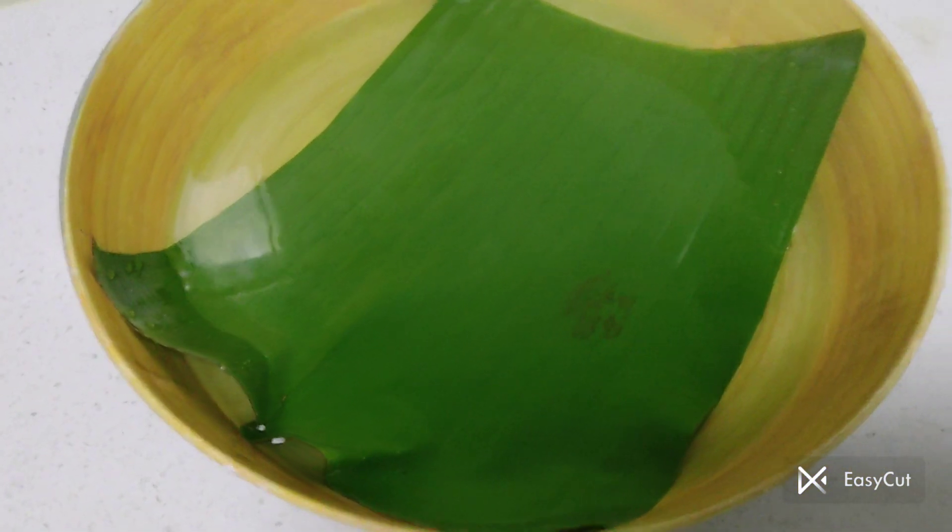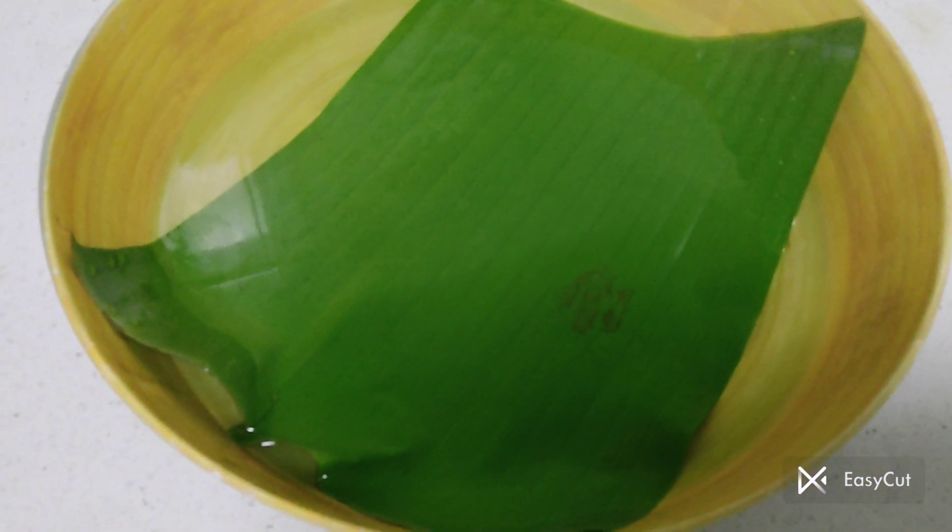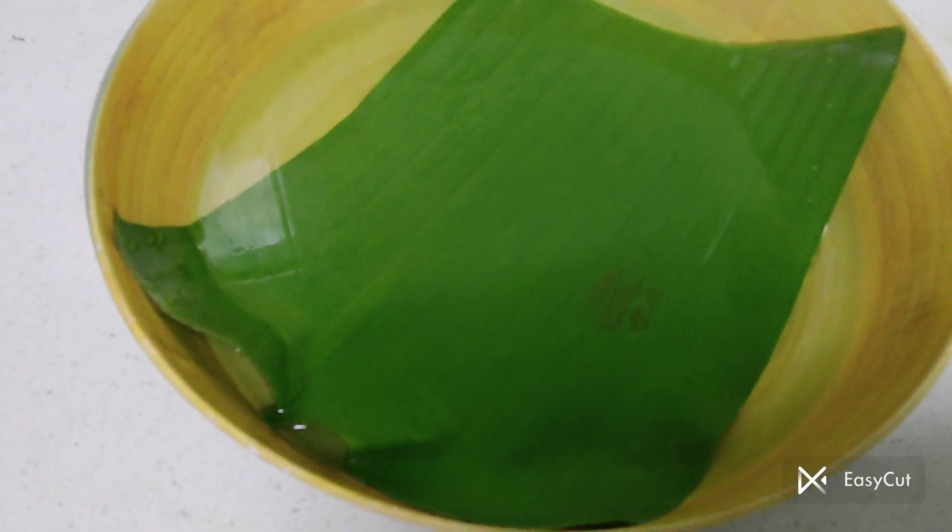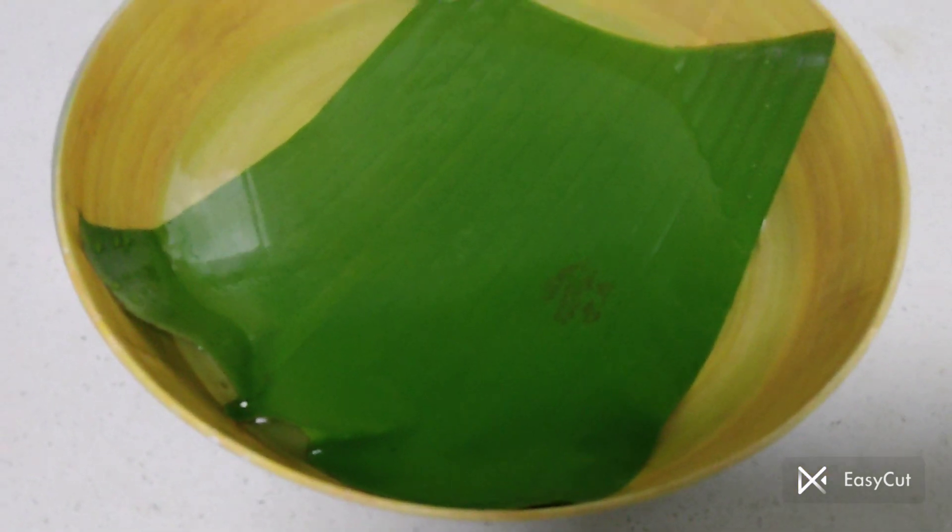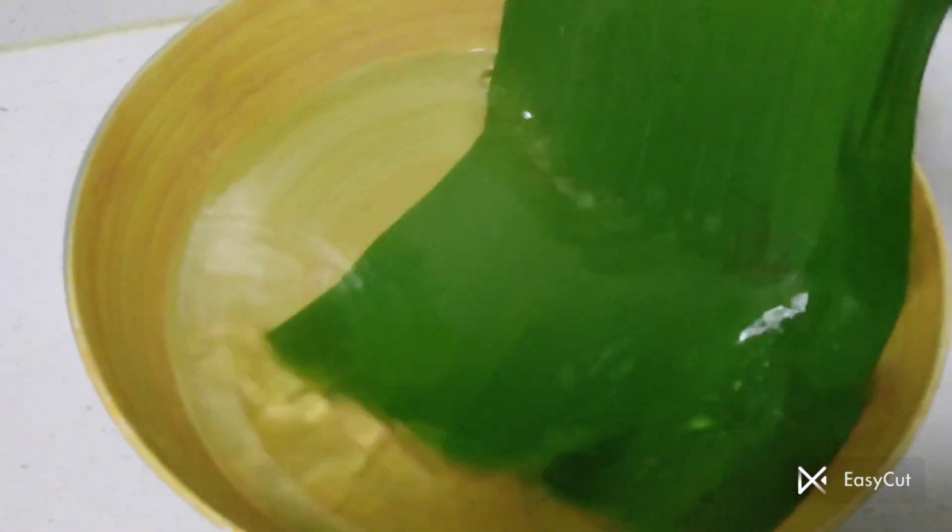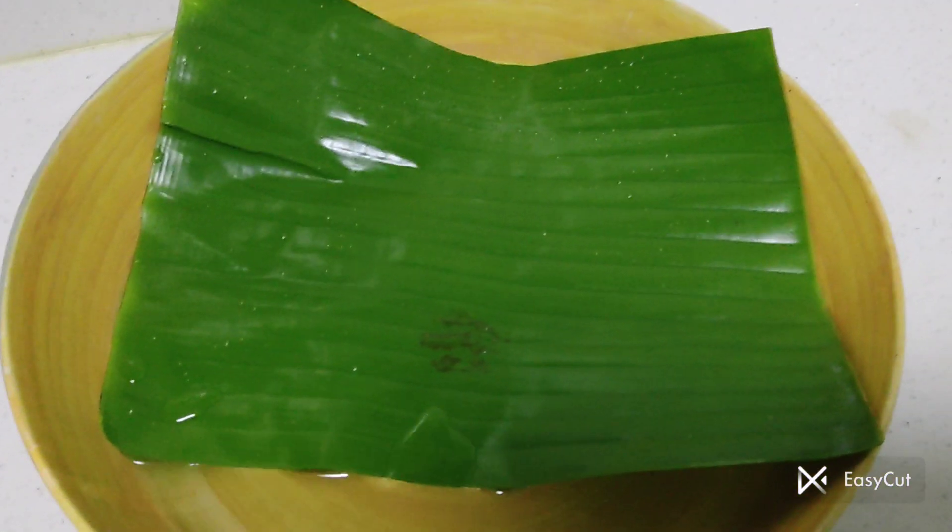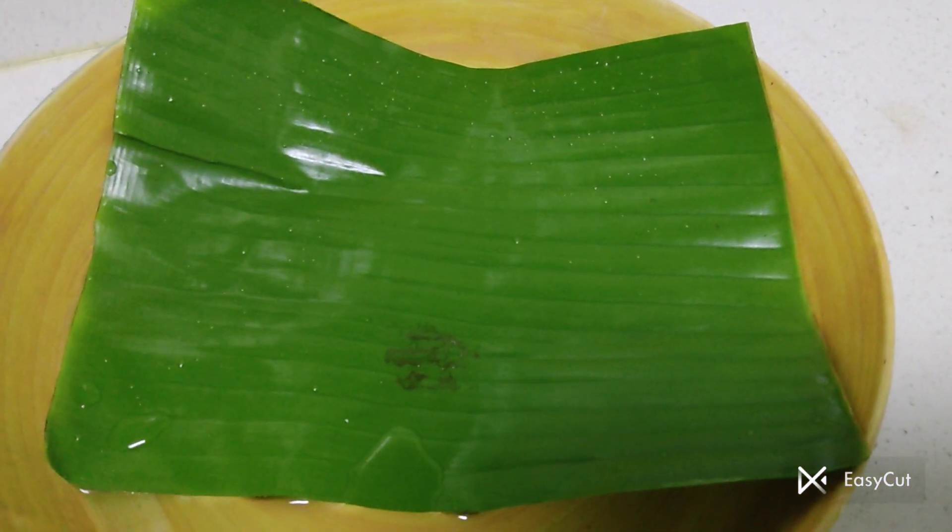You see the leaf is already changing color, which means it is getting soft. The leaf is soft already. You see the color, shiny.